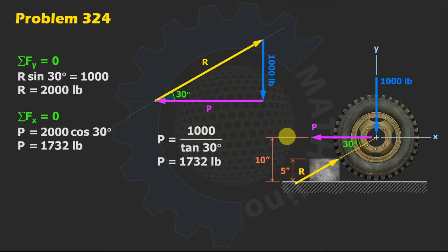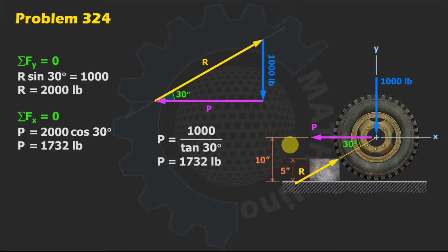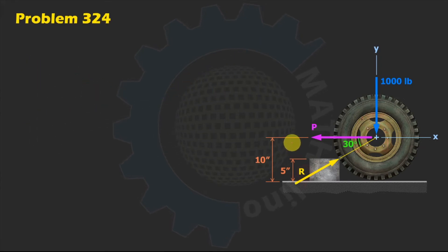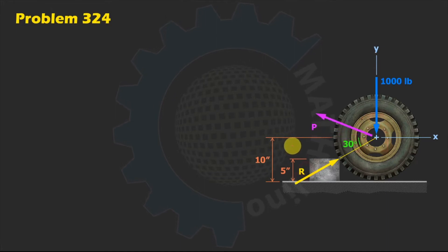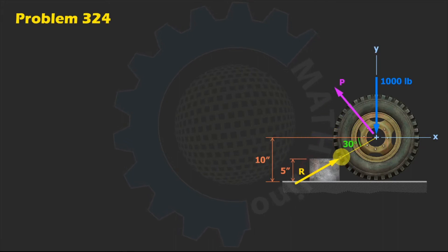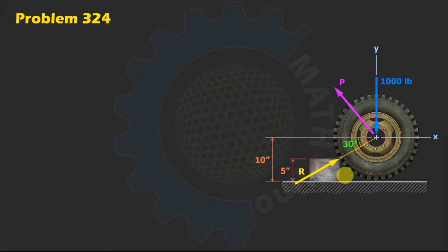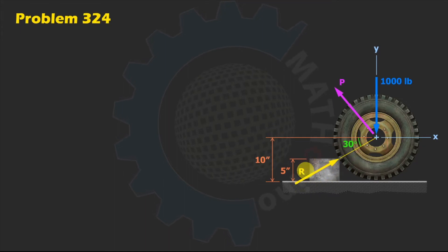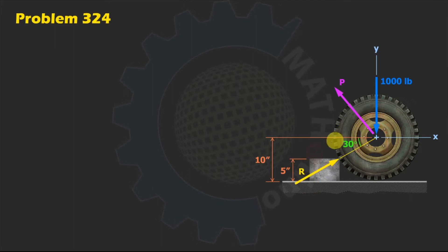In part two of this problem, we are required to find the minimum value of P. This is more interesting compared to part one. To accomplish this, we apply P at some angle theta upward from the horizontal. In this way, we do not oppose the block as much as we did in part one — the idea is to decrease the resistance of the block.